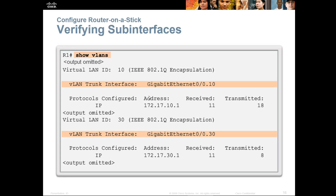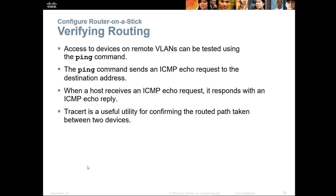To verify, you can ping between the two PCs — for example PC1 to PC3, which are on different VLANs. As long as those virtual interfaces, also known as sub-interfaces, are correctly configured on the router, you are good to go.